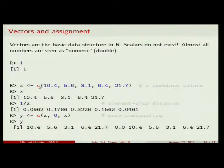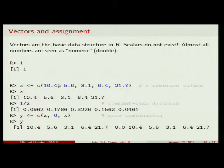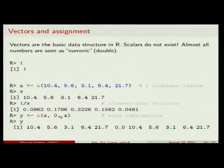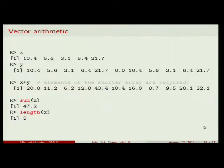One of the most important functions is c() for combine. It combines values and builds vectors. For example, c(10.4, 5.6, 3.1, 6.4, 21.7) creates a vector with those values assigned to x. Then you can do division — one over x — and each element is divided, giving you those values. You can do more combinations: take the value of x, combine it with zero and x again, and you get one copy of the vector, the zero, and the next copy of the vector.